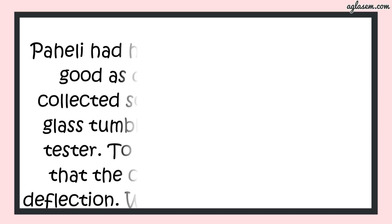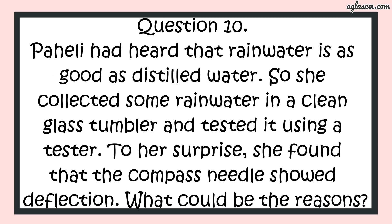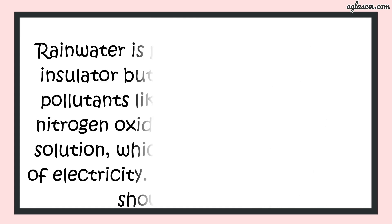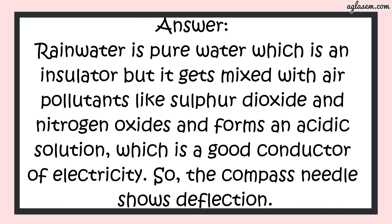Question number 10 says: Baheely had heard that rainwater is as good as distilled water. So she collected some rainwater in a clean glass tumbler and tested it using a tester. To her surprise, she found that the compass needle showed deflection. What could be the reason? The answer is: rainwater is pure water which is an insulator, but it gets mixed with air pollutants like sulphur dioxide and nitrogen oxides and forms an acidic solution which is a good conductor of electricity. So the compass needle shows deflection.